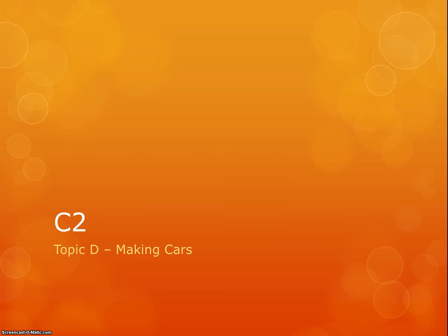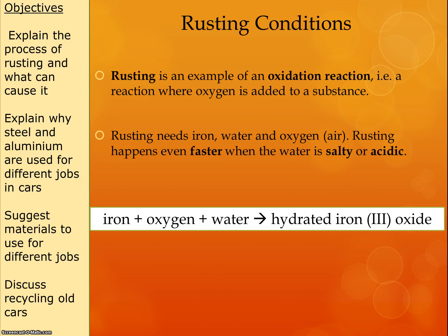Next up in Chemistry 2 is Topic D, which is entitled Making Cars. It's not nearly as terrifying as that title might lead you to think. There are just a few key things in this. The first bit is really about rusting.